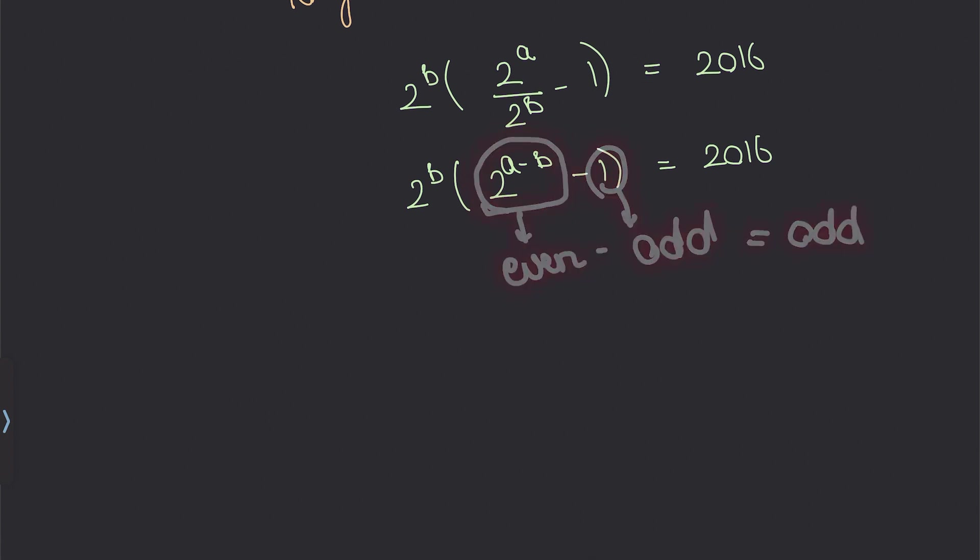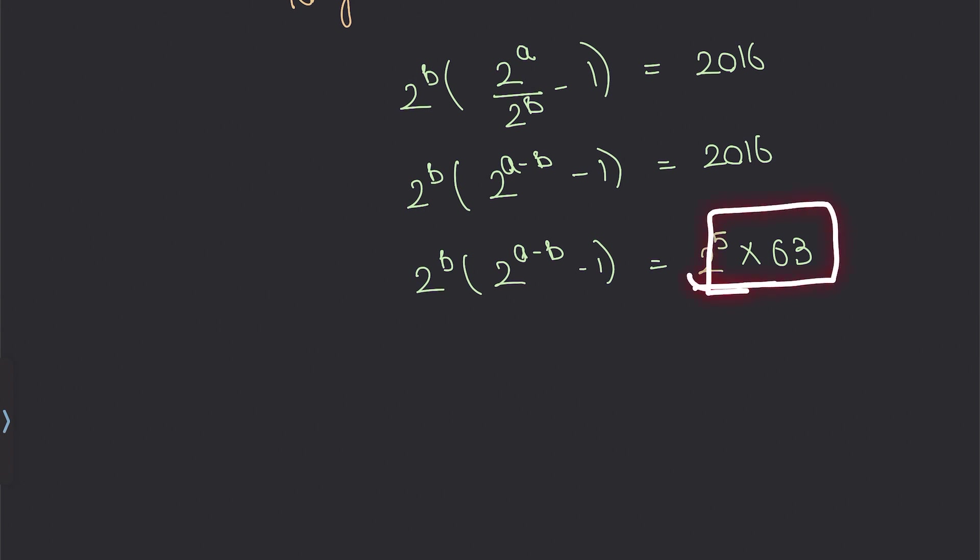So all the even terms are supposed to be covered in 2^b. If we notice, 2016 can be written as 2^5 × 63. Now since all the even terms in this are present in 2^5,